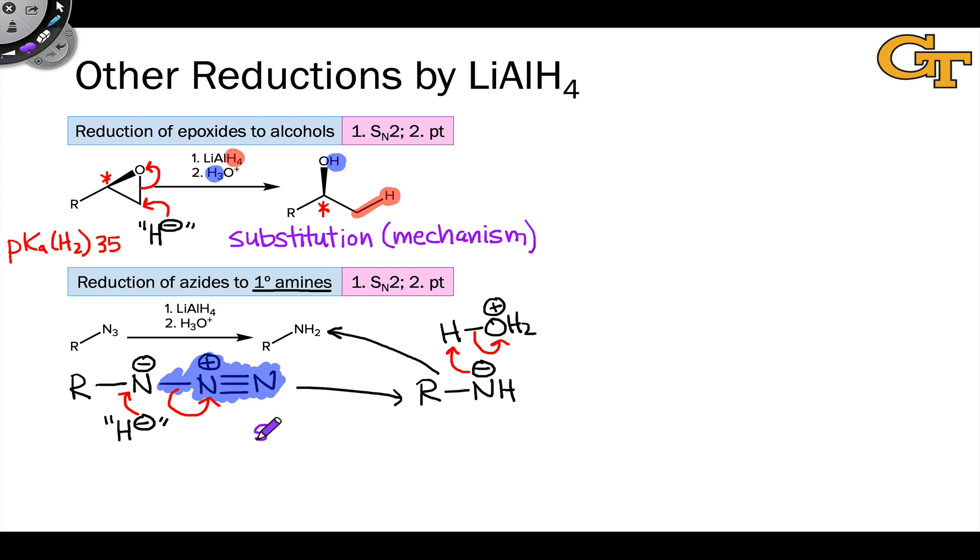And notice here again in this example as well the key step, the key elementary step is the substitution of H- for N2. This kind of reductive substitution by aluminum hydride or hydride is common in starting substrates that contain a good leaving group or nucleofuge.